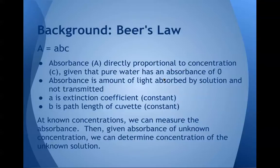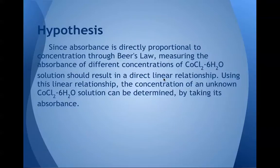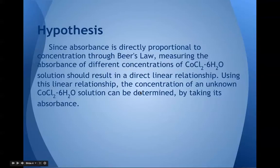Through Beer's Law, at known concentrations we can measure the absorbance, and then given the absorbance of an unknown concentration, we can determine the concentration of the unknown solution. Our hypothesis is that since absorbance is directly proportional to concentration through Beer's Law, measuring the absorbance of different concentrations of CoCl2·6H2O solution should result in a direct linear relationship. Using this linear relationship, the concentration of an unknown CoCl2·6H2O solution can be determined by taking its absorbance.